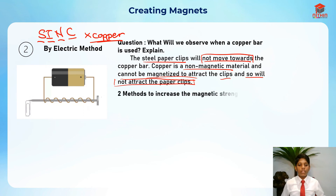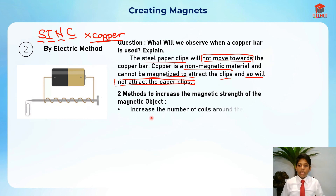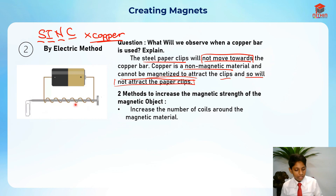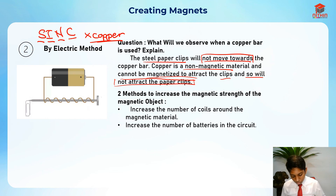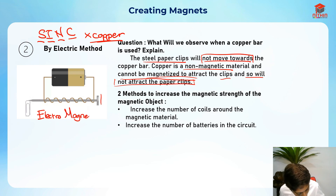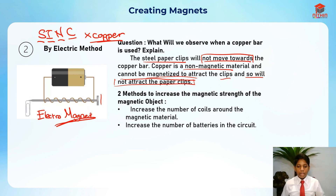There are two methods to increase the magnetic strength using the electric method. First, increase the number of coils around the magnetic material — the more coils, the stronger the magnet. Second, increase the number of batteries in the circuit, which provides more electricity and makes a stronger electromagnet. This temporary magnet created by the electric method is called an electromagnet — a very important word to use in exams.